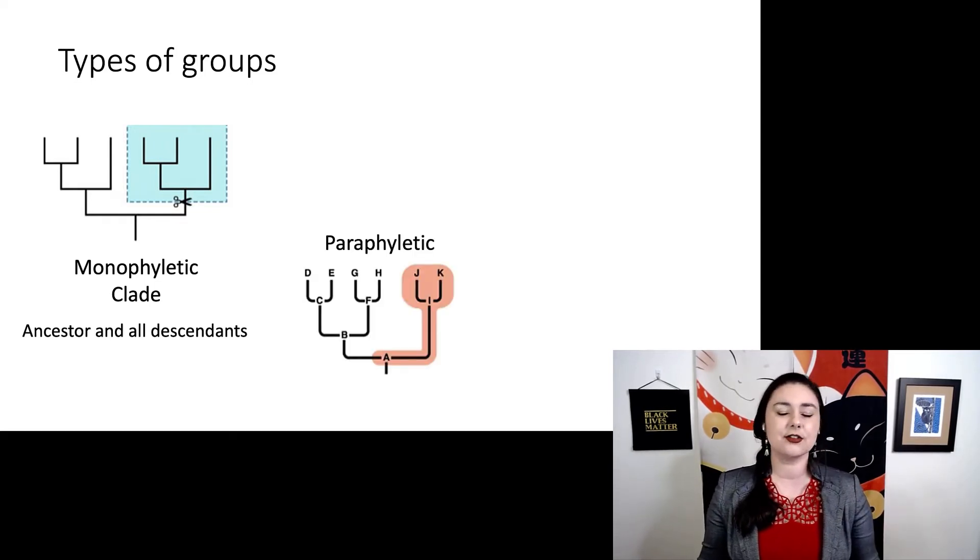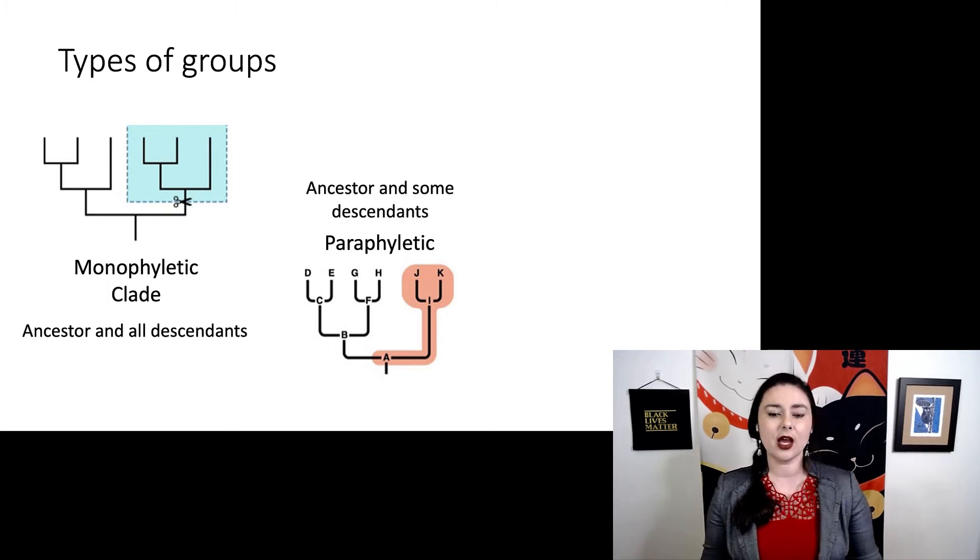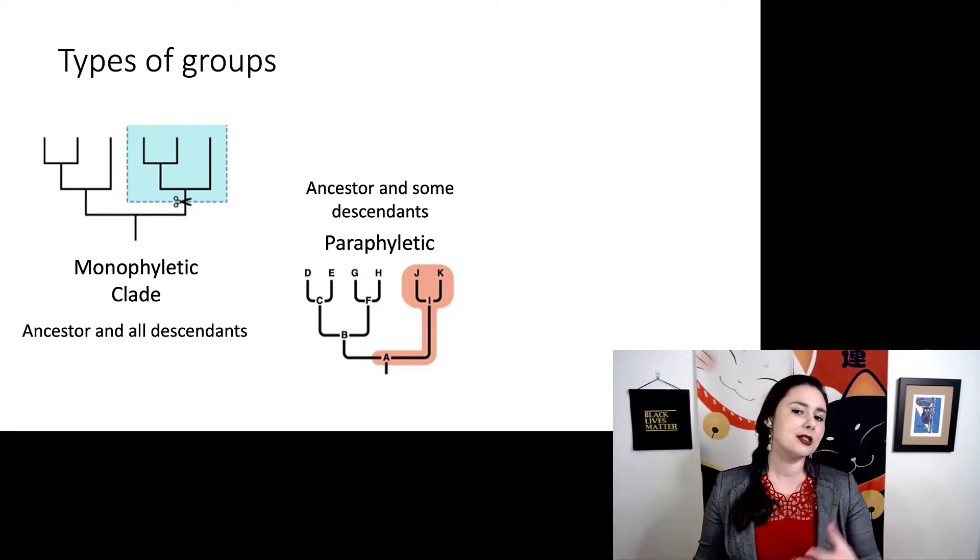Here is a slightly different type of group. This is called a paraphyletic. So now we've taken an ancestor and some of its descendants. So some, but not all.